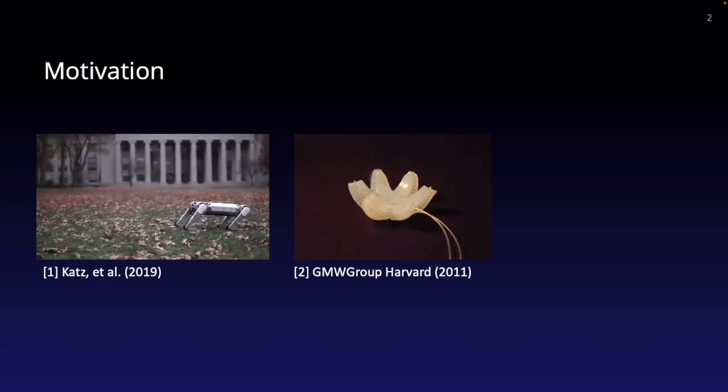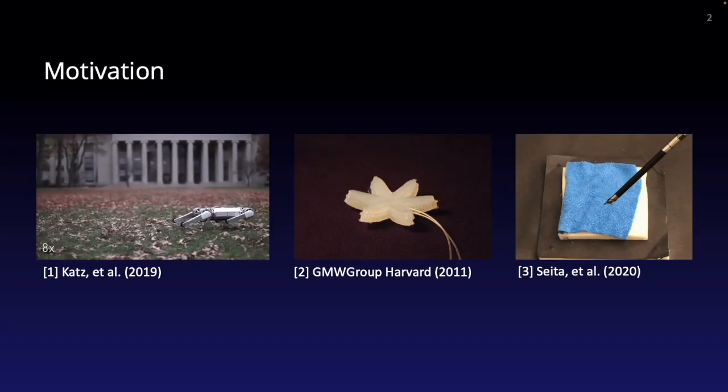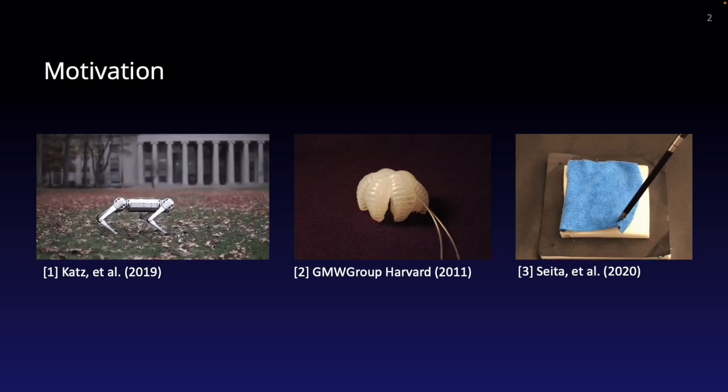In robotics, actuator type and placement plays a crucial role in the capabilities, cost, and complexity of the system. This problem is persistent in many robotics applications, from legged robots, soft robots, and can even be shown to encompass manipulation tasks as well.